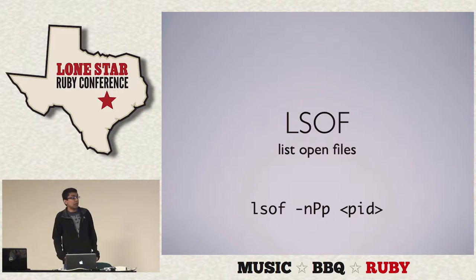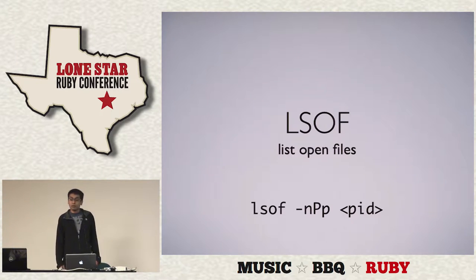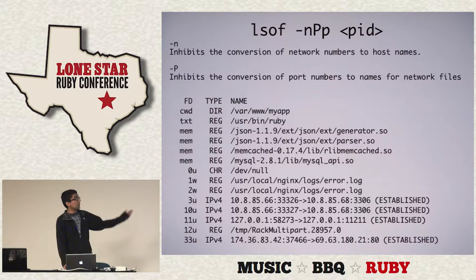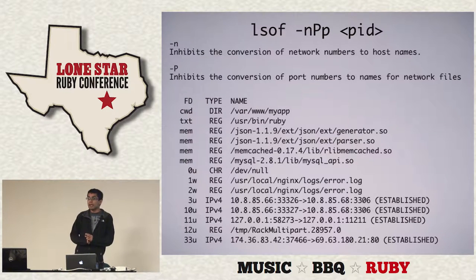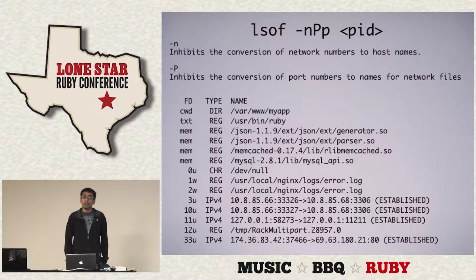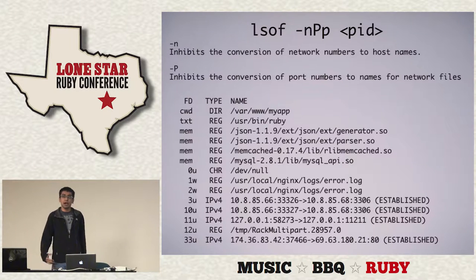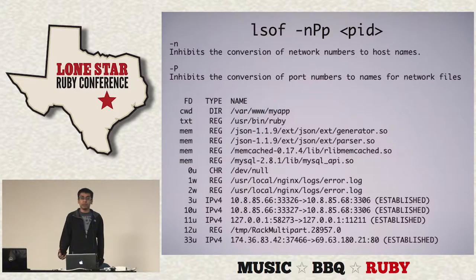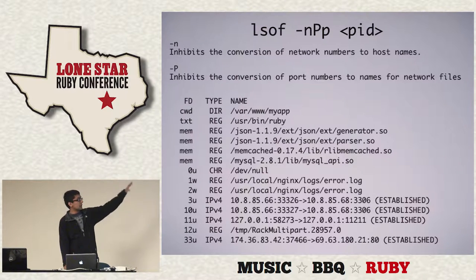The first tool is lsof. This is available on your Mac and runs on Linux as well. It's used to list open files. You can take any running process on your system — Ruby or not — run lsof on it, and get a sense of what it's doing. This is usually the first thing I'll run because it gives you a high-level overview of what the process is doing.